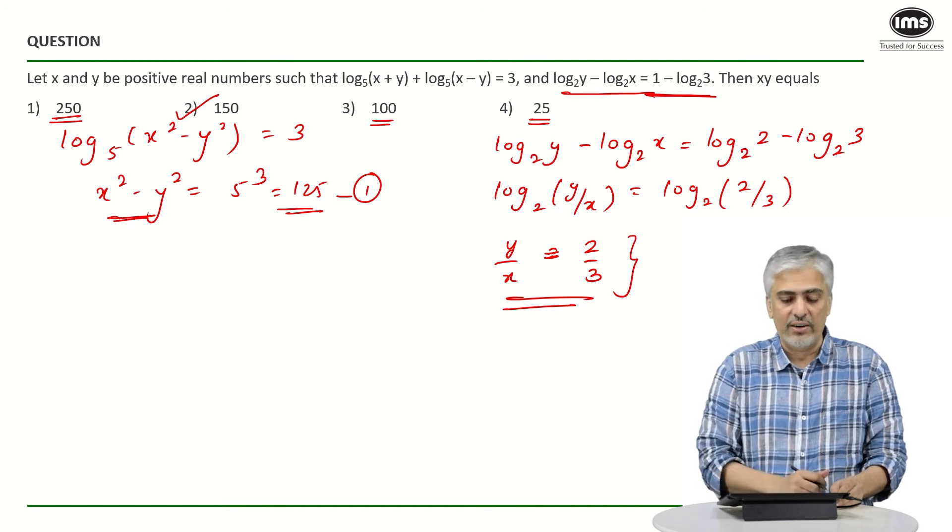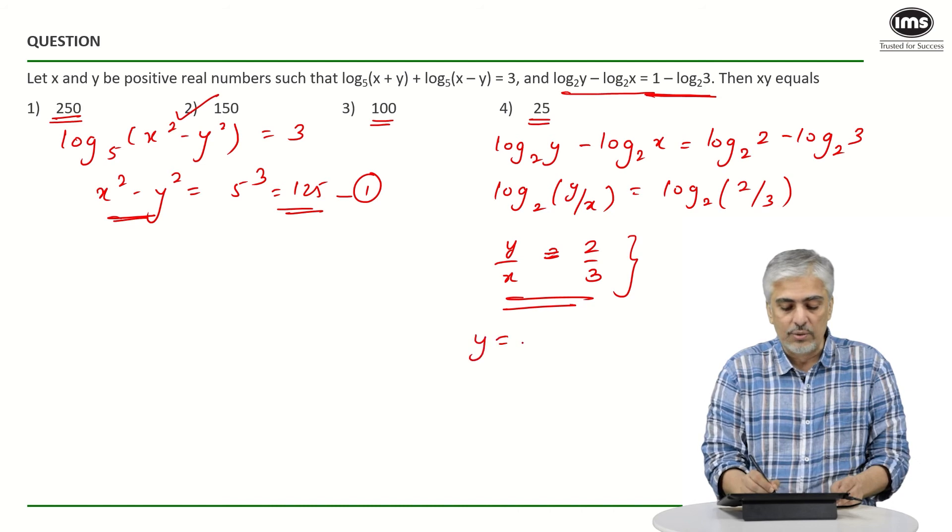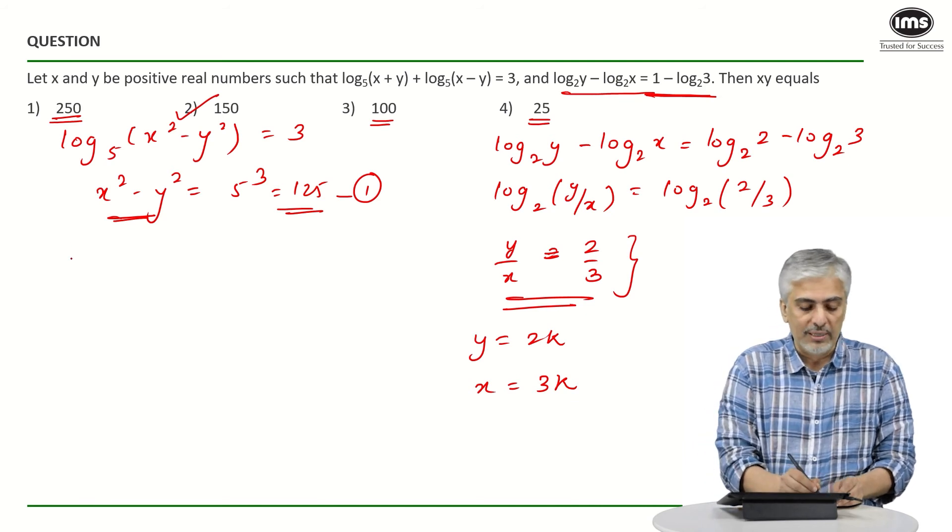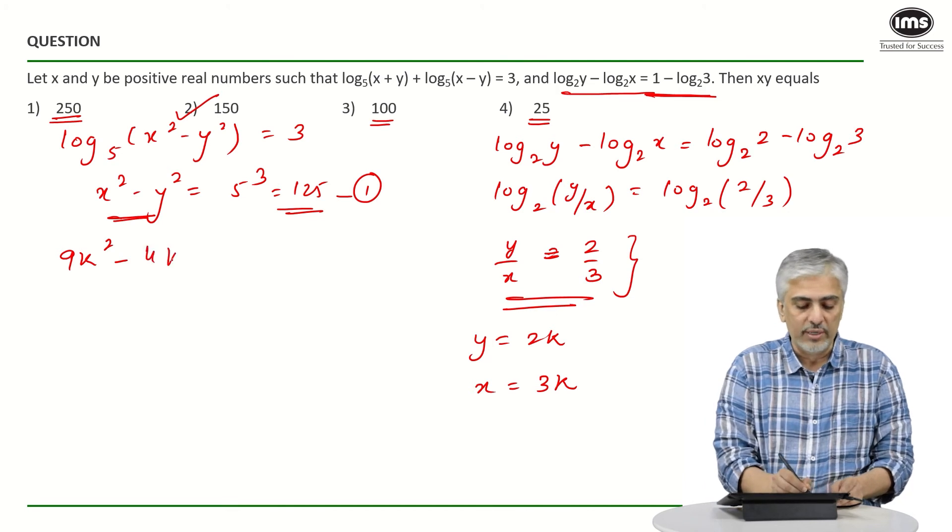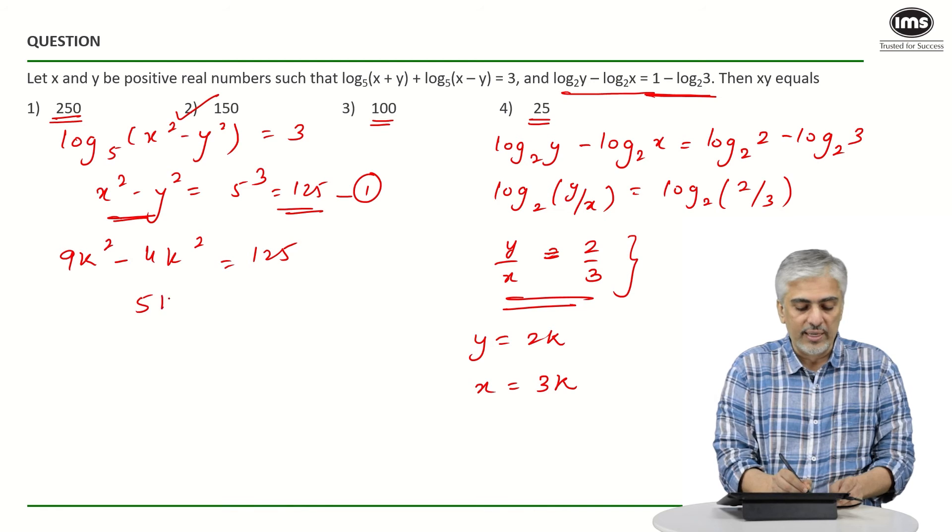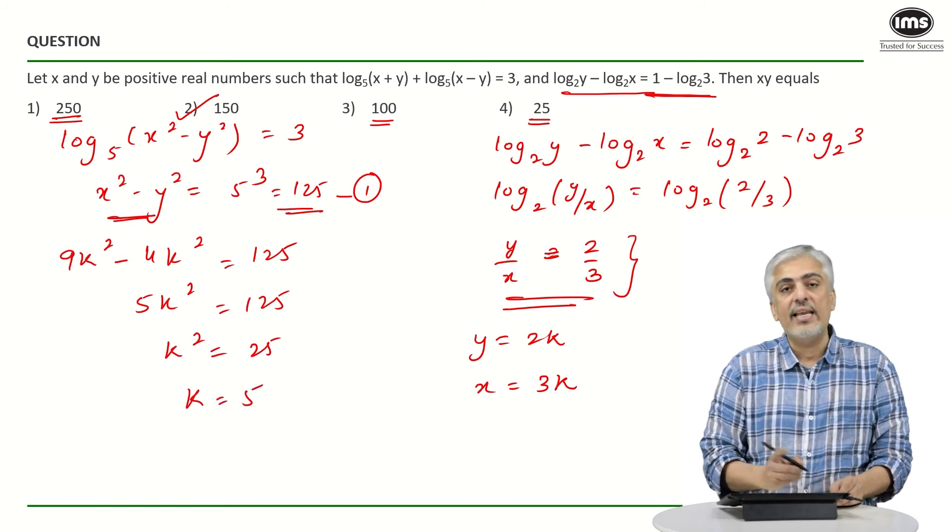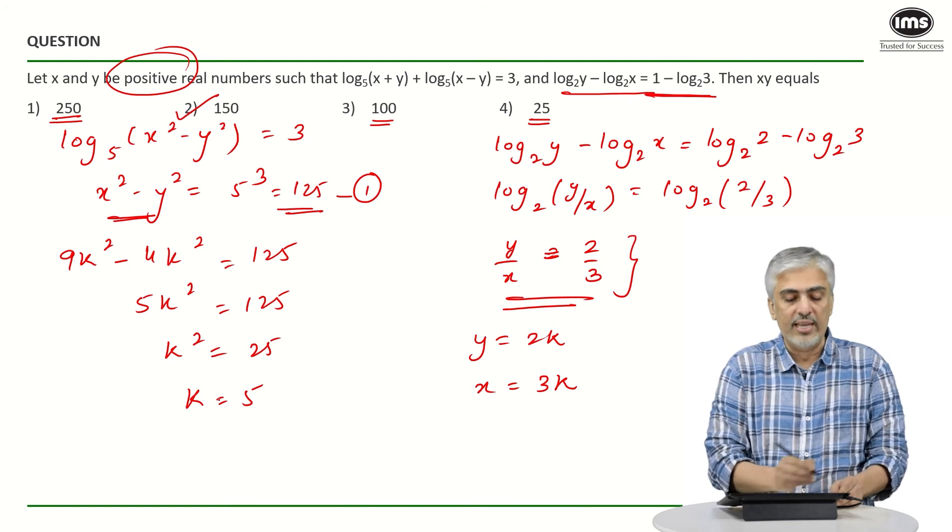So if y/x is 2/3, I can take y is equal to 2k and x is equal to 3k and put it in the first equation. x² will become 9k² minus y² will become 4k² is equal to 125. So 5k² is 125. So k² is 25 and k is 5. k cannot be plus and minus 5 because they had mentioned the word positive real number. So k is only equal to 5.